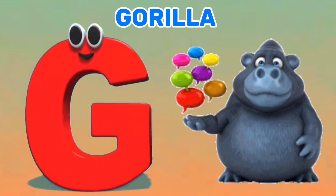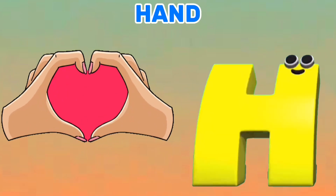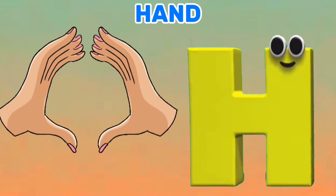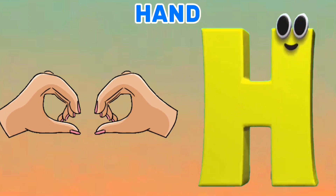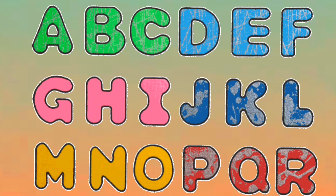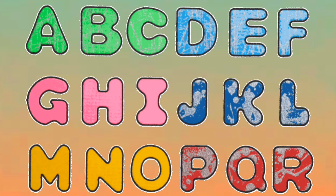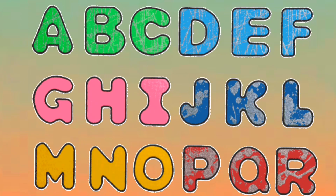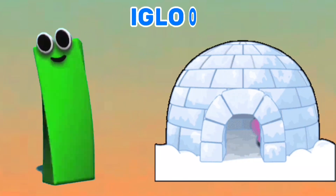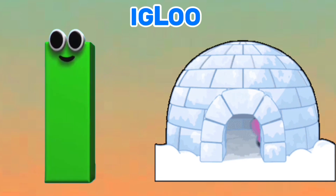G is for Gorilla. G, G, Gorilla. H is for Hand. H, H. It's the letters of the alphabet!